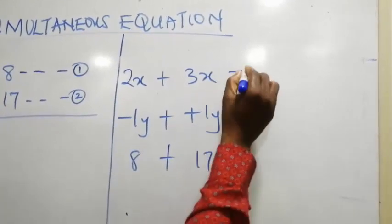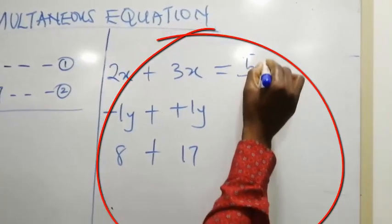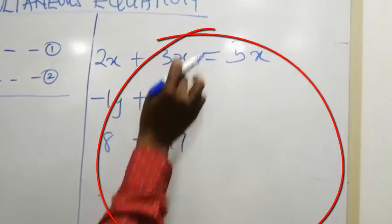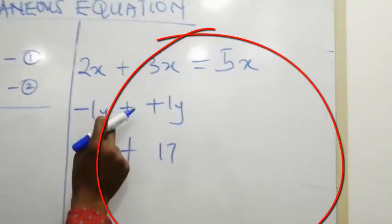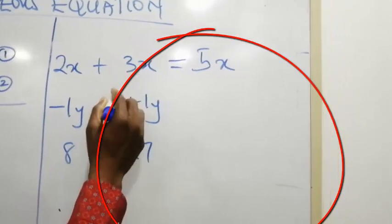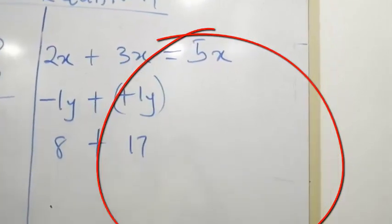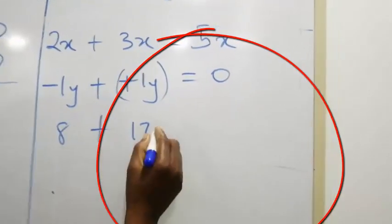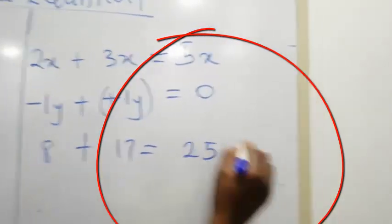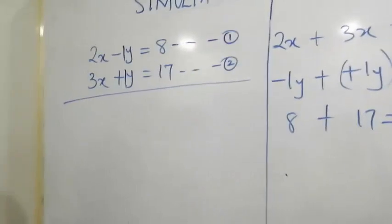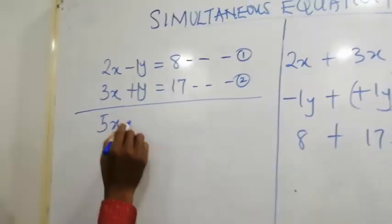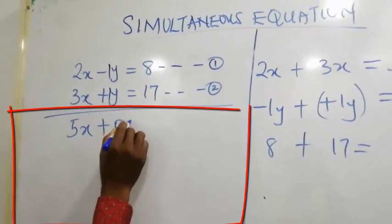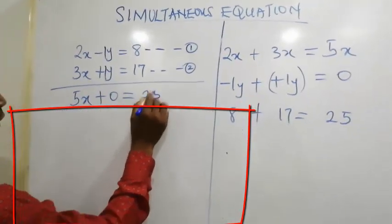Can we add this together? We have 5x, 2x plus 3x, we have 5x, minus 1y plus 1y. That will give us 0. 8 plus 17, that will give us 25. Let's bring that back here. We have 5x plus 0 equals to 25.